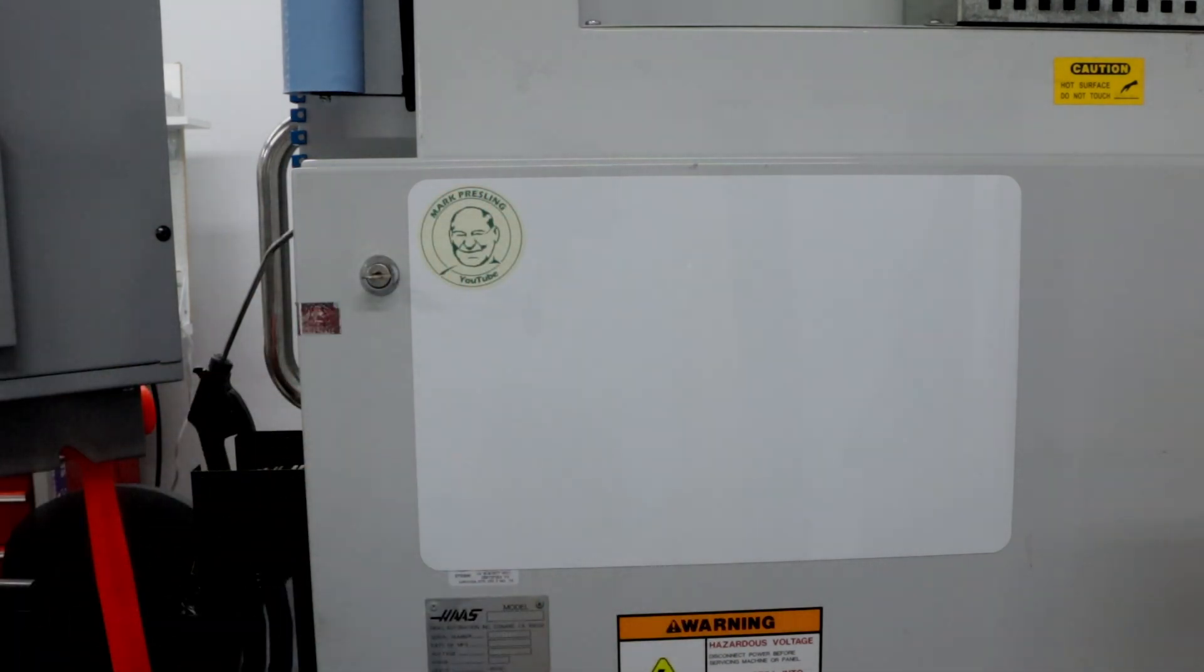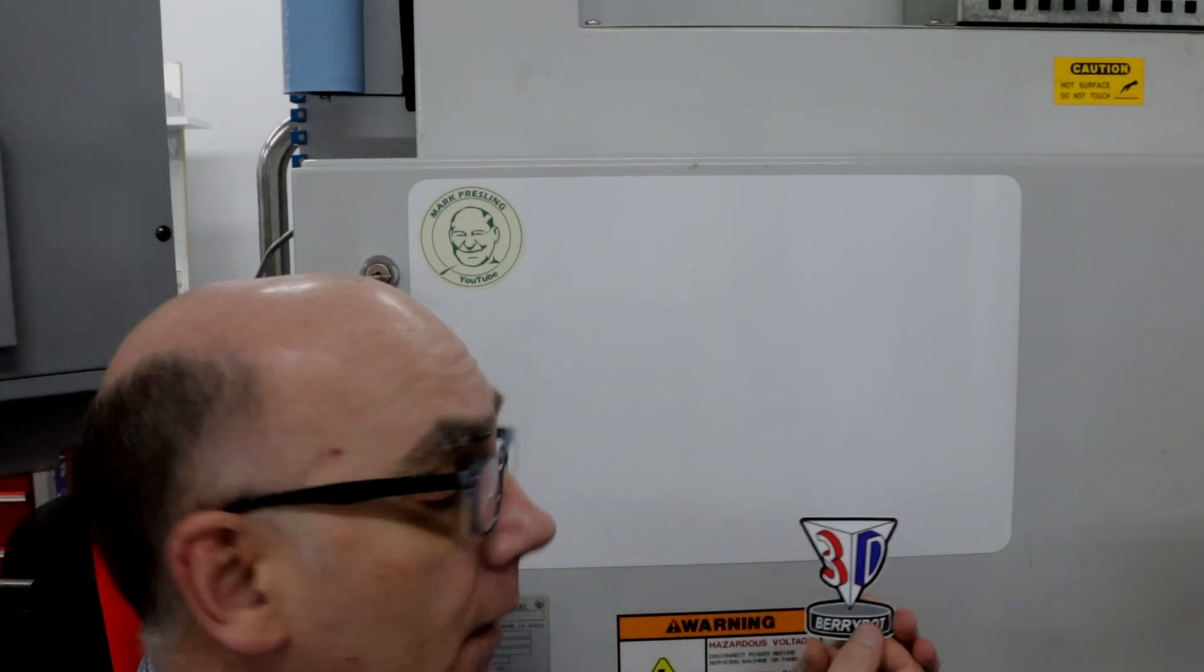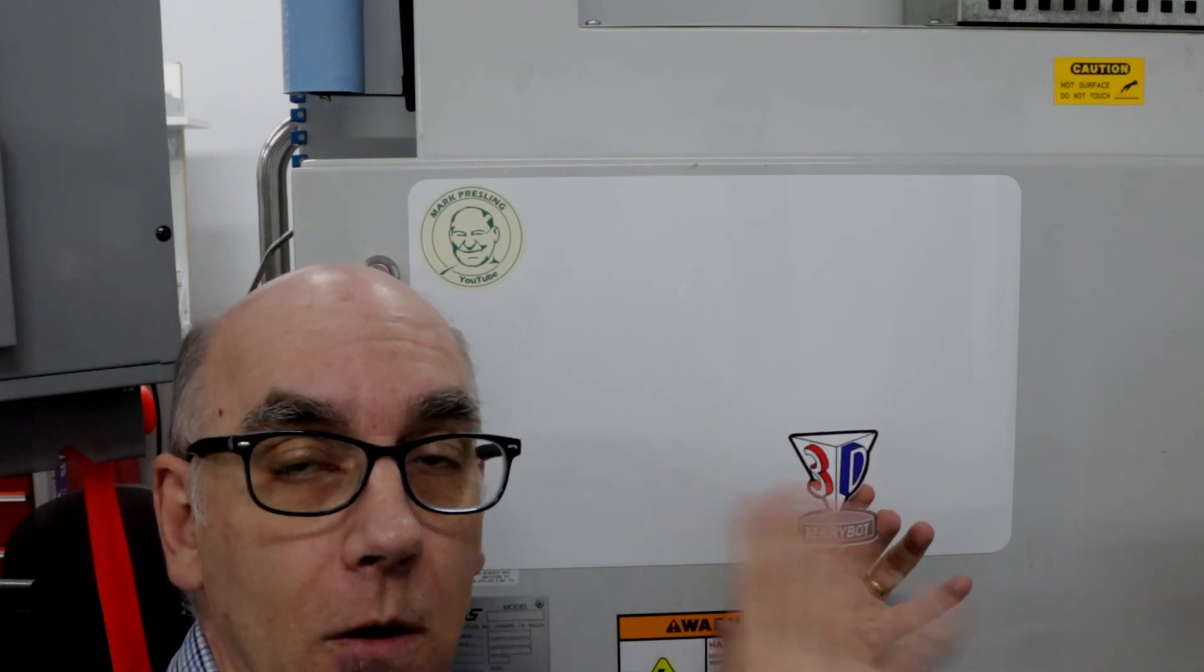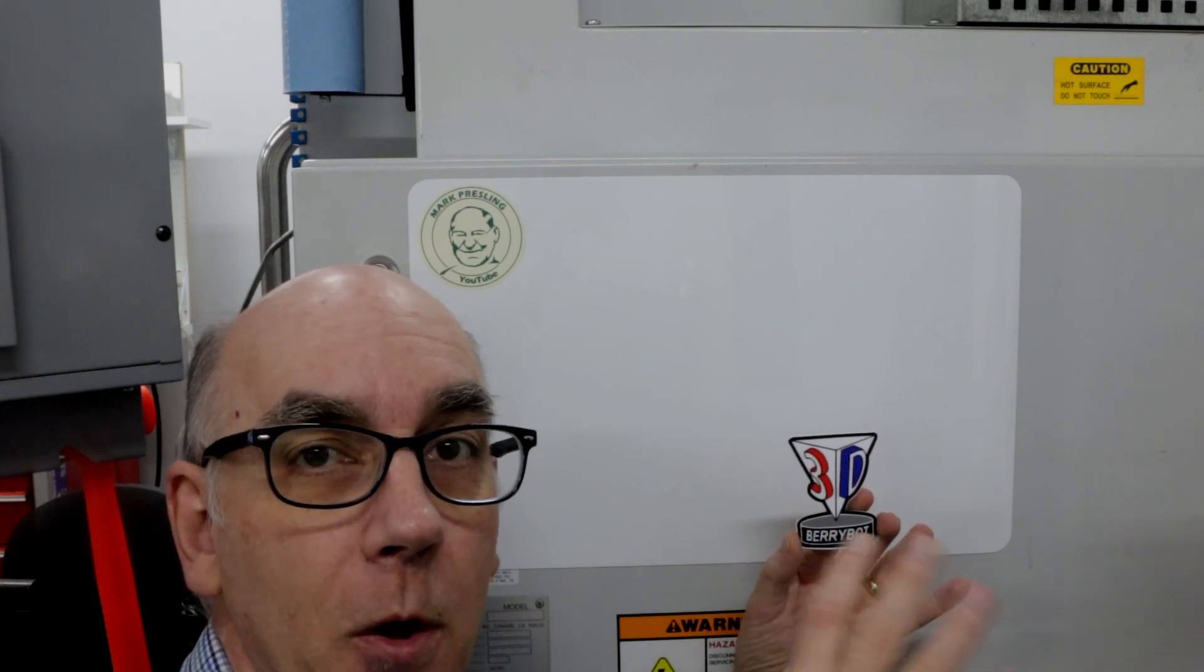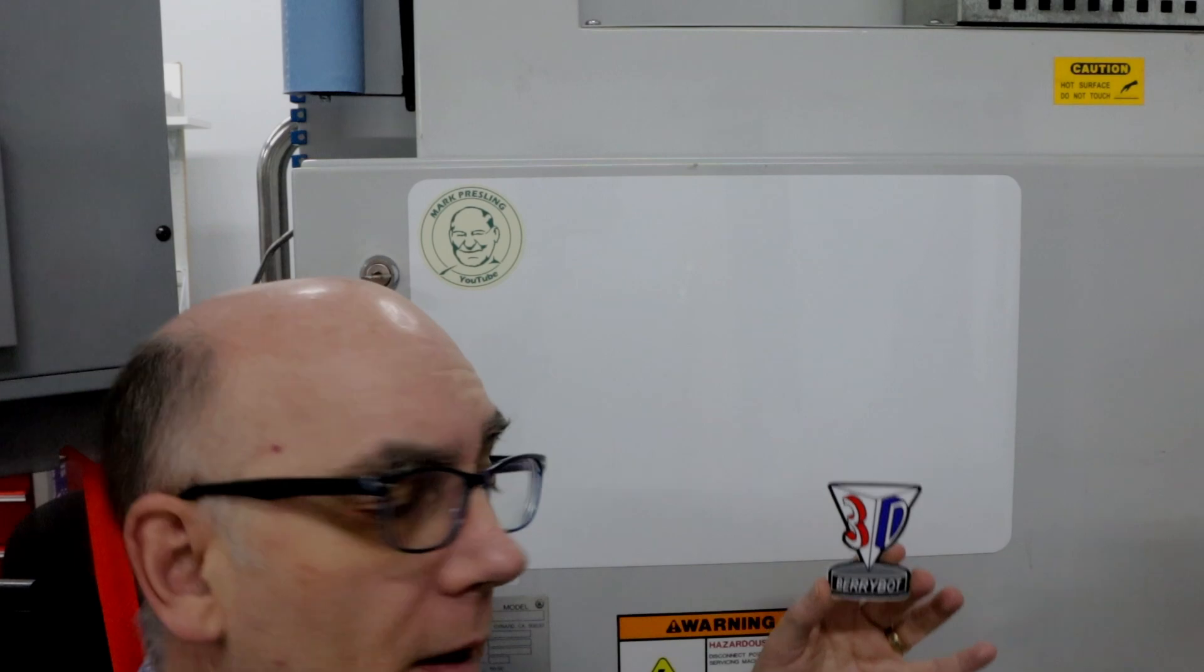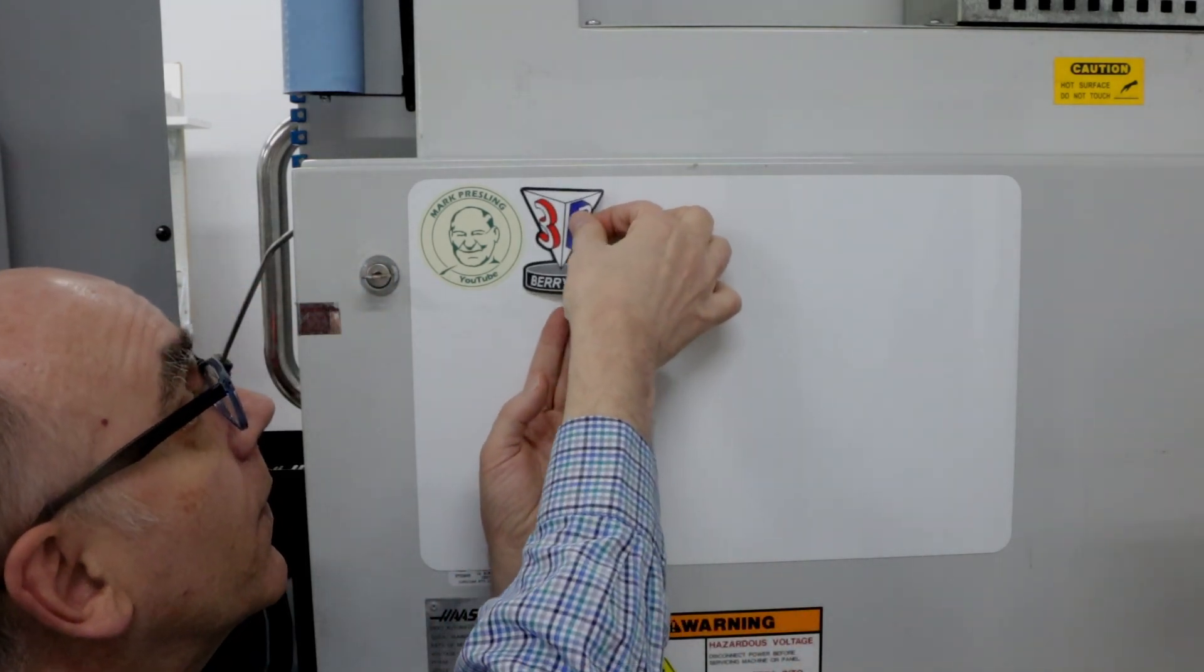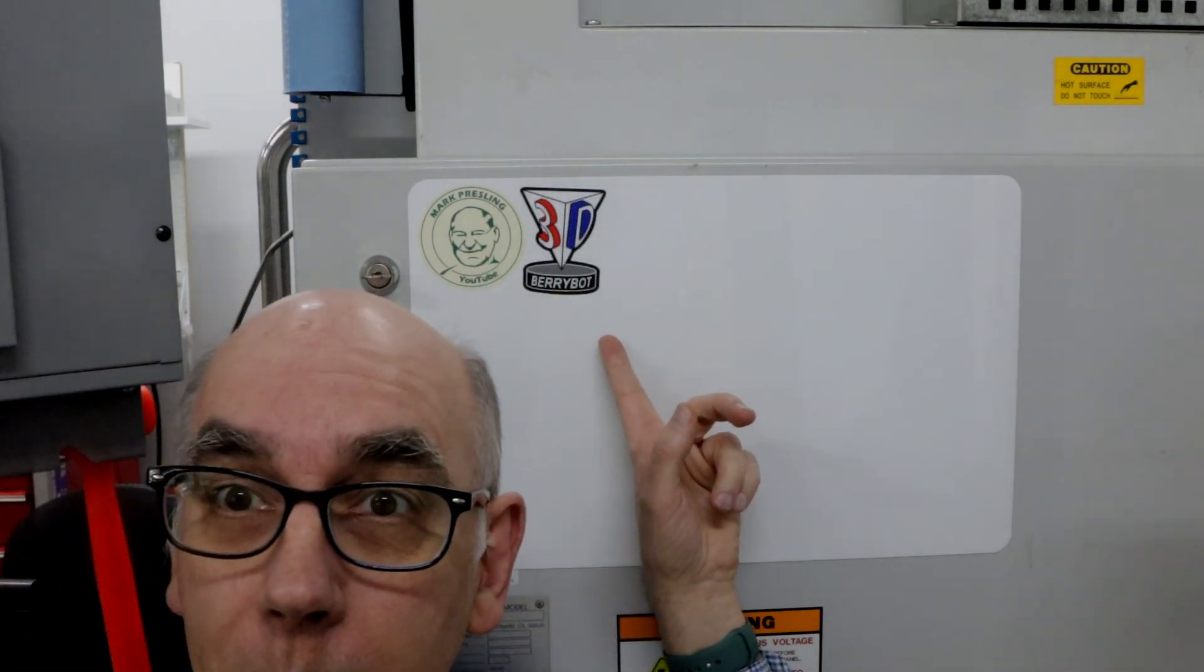Okay, so Mark gets the very first spot on here. And then the second sticker I have is from Warner Berry of BerryBot. And he's someone I've been following for a very long time. I first learned about him when he was doing the BerryBot 3D, which was a Delta printer, and was fascinated about that. So I've been following him since before I had my own channel.